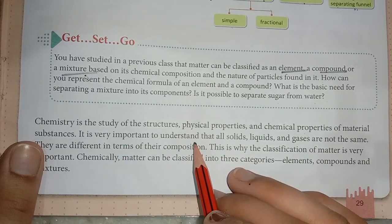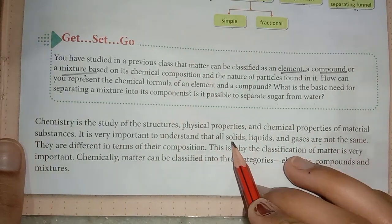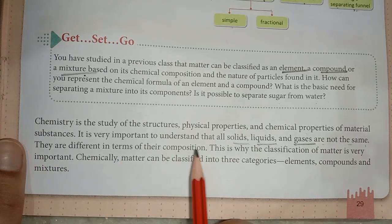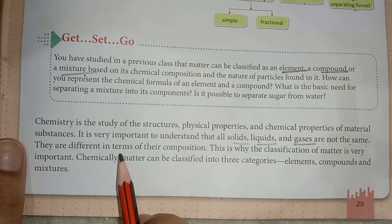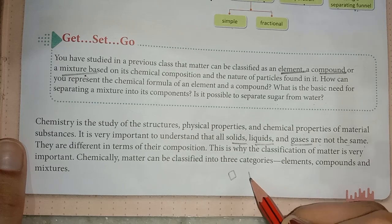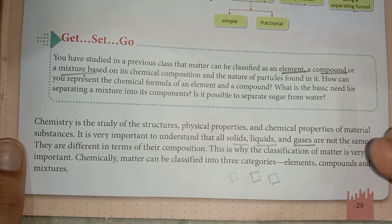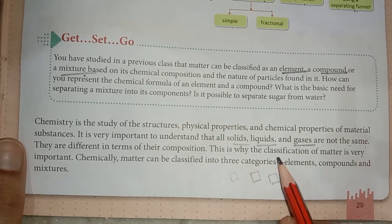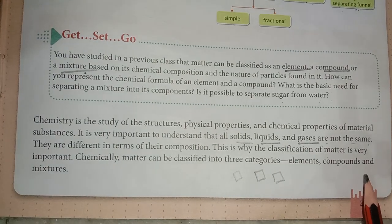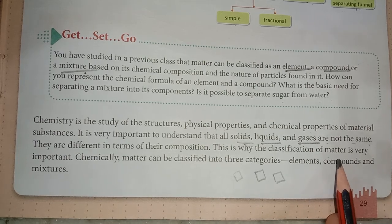Solids, liquids, and gases are different in terms of their composition — the ratio of their composition is different. This is why the classification of matter is very important. Chemically, matter can be classified into three categories: elements, compounds, and mixtures — which we will study in this chapter.